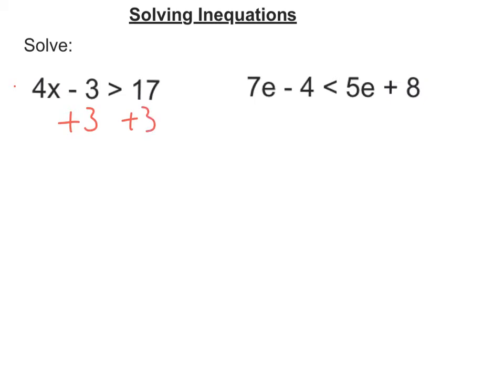So 4x minus 3 plus 3, well the 3 cancels, so we'll get 4x. The symbol stays the same. 17 plus 3 is 20.